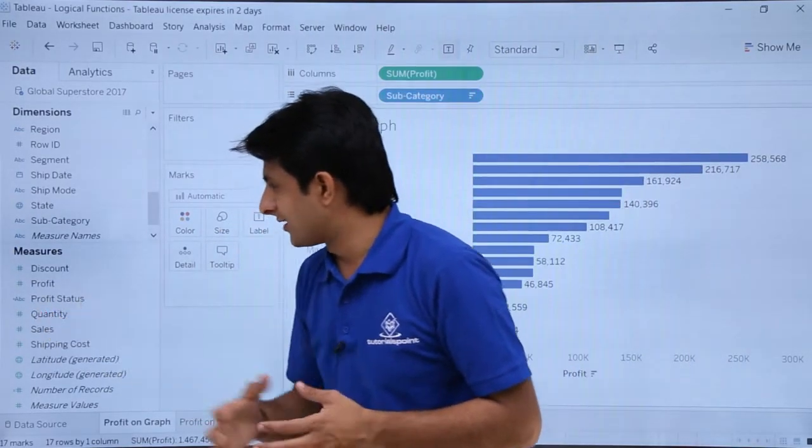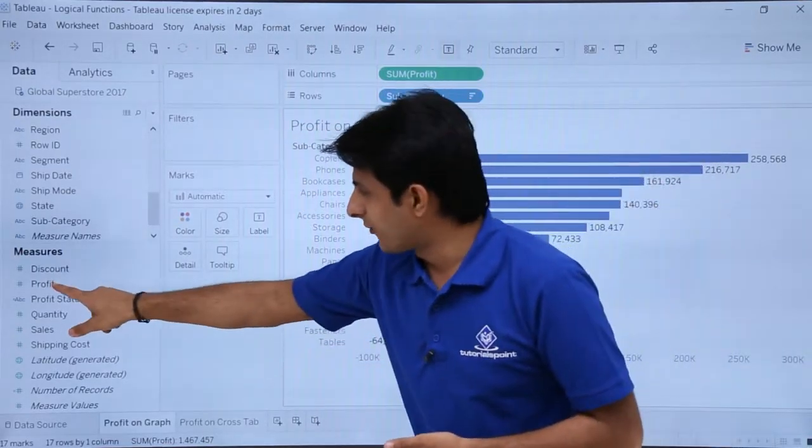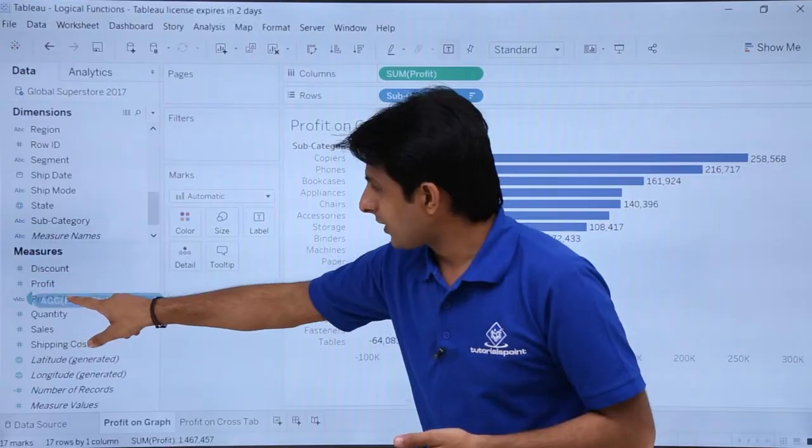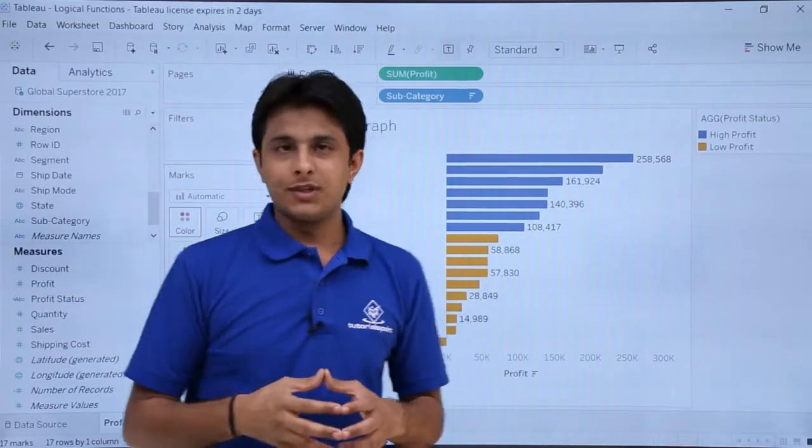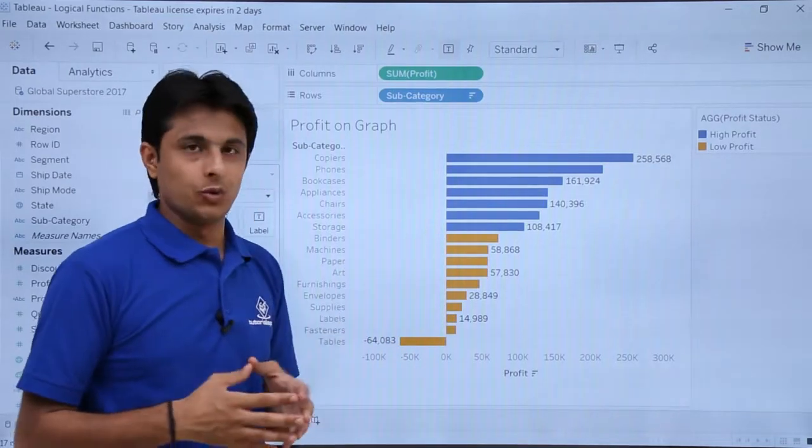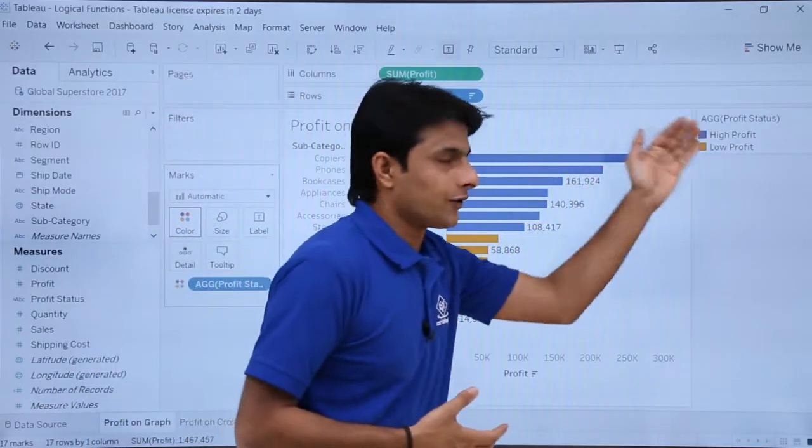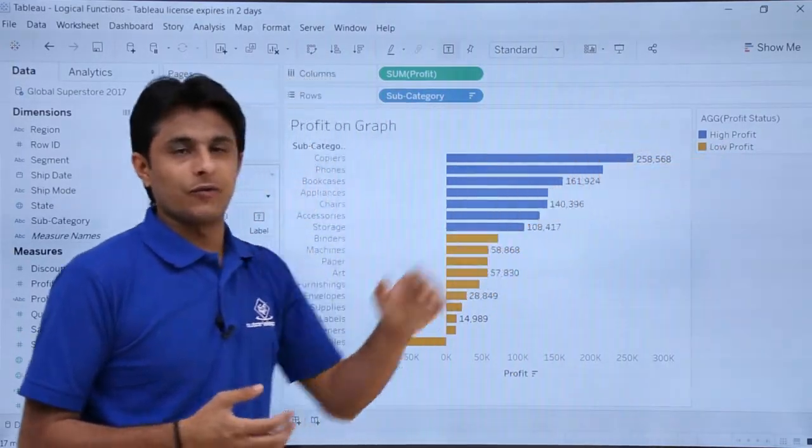So here if you see that the profit status and here right now, this is what I've shown you earlier. Pick up this profit status and drop into this colors part. Now if you observe, these are colored into two categories. One is the yellow and second one is blue. On the right hand side, you'll understand why it is yellow and blue. Yellow stands for low profit and this one blue stands for the high profit.